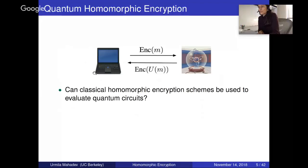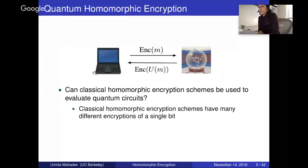It seems like this is a pretty difficult question because there are properties of classical homomorphic encryption and quantum computation which seem to conflict. The property of classical homomorphic encryption which seems troublesome is that classical homomorphic encryption schemes are probabilistic — they have many different encryptions for a single bit. This is actually necessary because if the encryption were deterministic, the server could run two different computations, compare the output ciphertexts, and learn something. But if they're probabilistic, this kind of cheating falls apart.